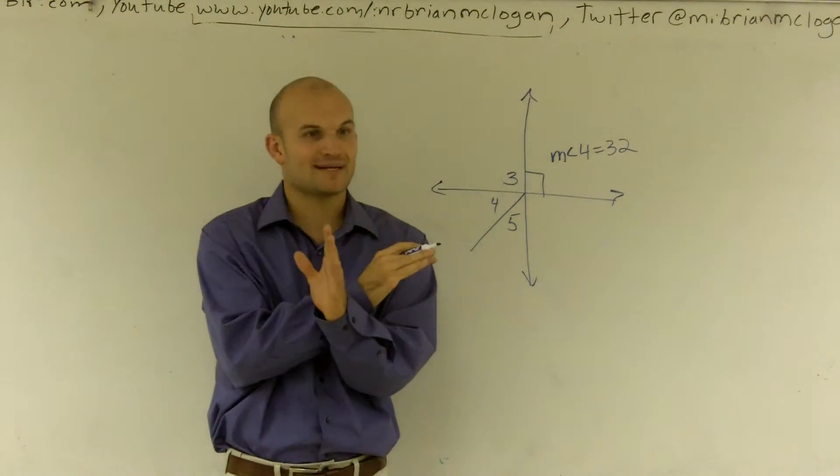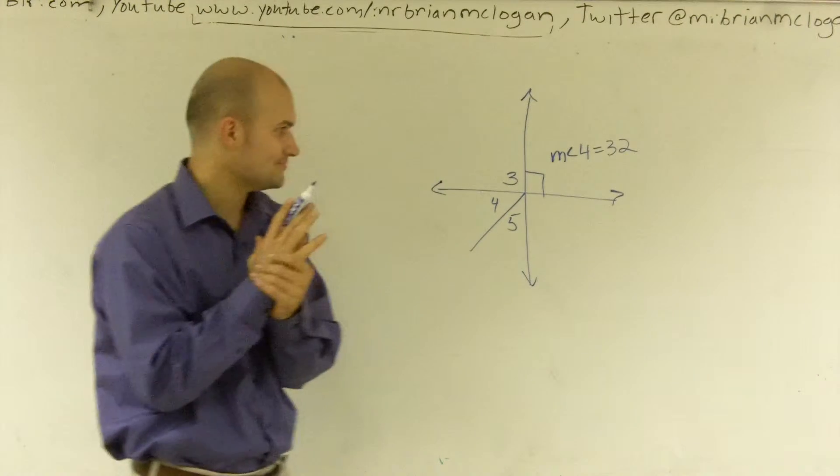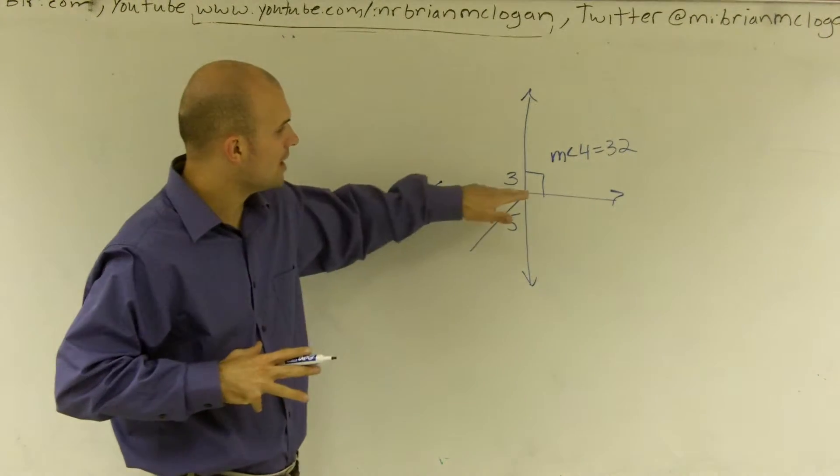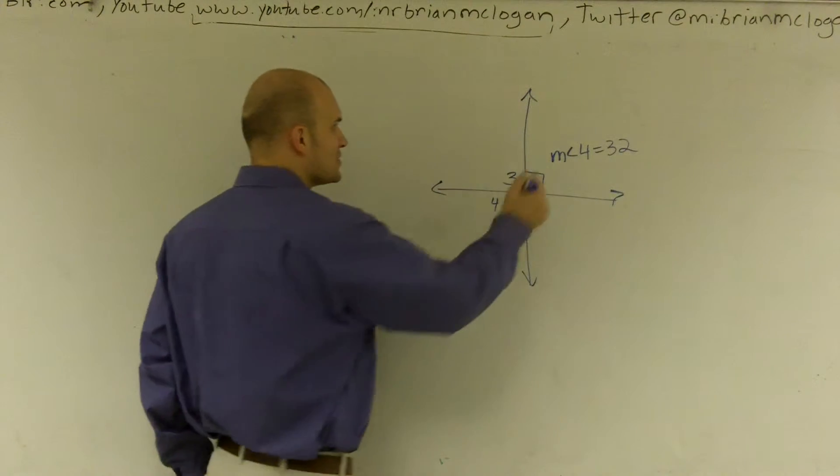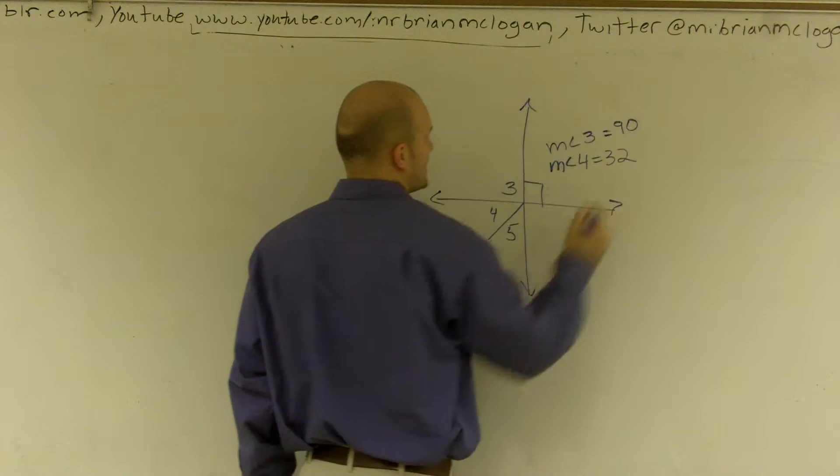Well, if one of them is perpendicular at 90 degrees, then every single one of the other angles is also going to be 90 degrees. So therefore, we can say that measure of angle 3 is equal to 90 degrees.